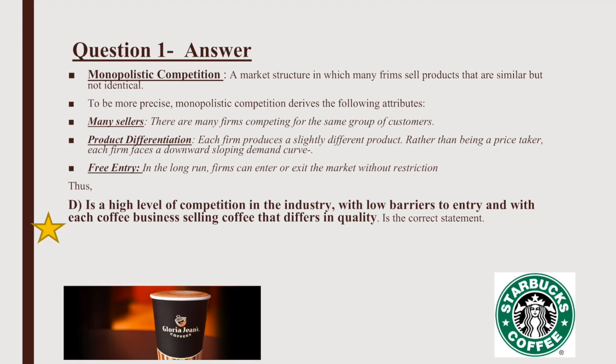To answer this question, we must deconstruct the definition of monopolistic competition and analyze its features. Monopolistic competition is a market structure in which many firms sell products that are similar but not identical. One attribute is many sellers — there are many firms competing for the same group of customers — therefore instantly ruling out B and C, leaving only A and D as possible answers.